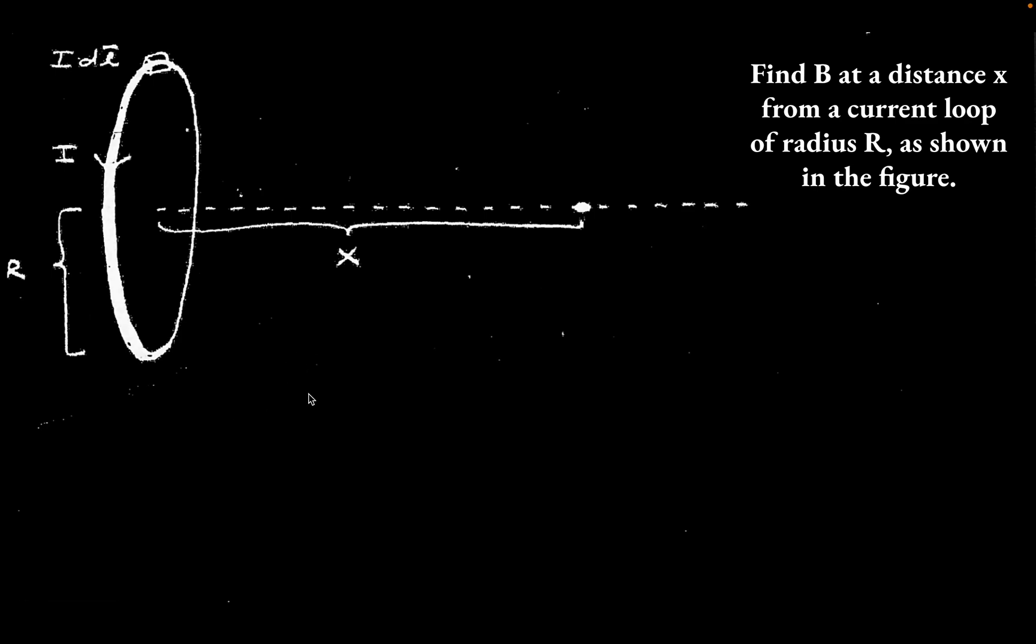All right, my friends, we are going to look at an example of using the dreaded Biot-Savart law to find the magnetic field at a point, a distance x away from the center of a current carrying loop, actually along the axis of symmetry. We're just going to find the magnetic field at this point that's hovering to the right of this loop.